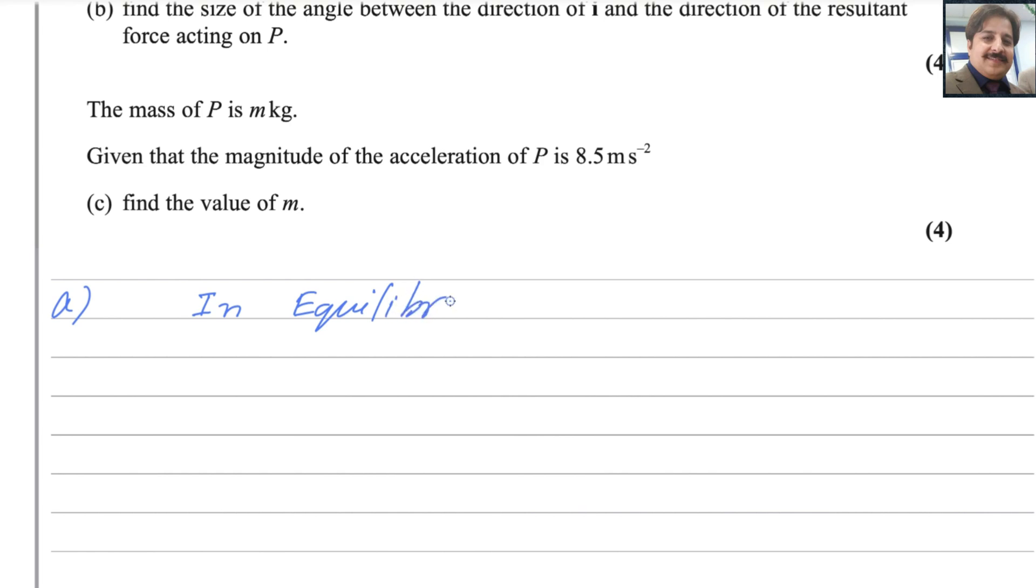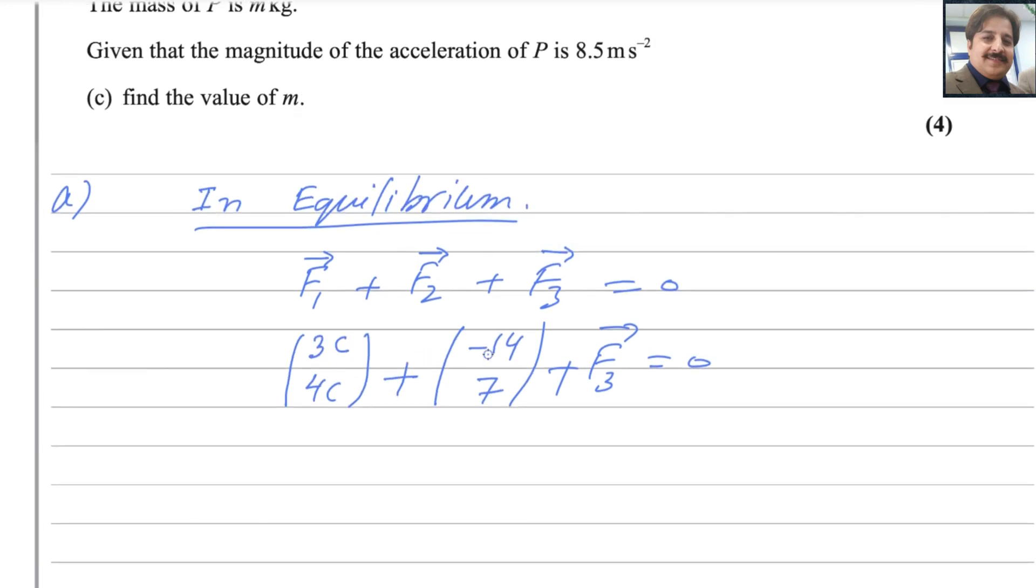These vectors we can write in column vector form, that is more easier to solve: 3c and 4c, minus 14 and 7. Because they are vectors, better you mention by using arrows. So plug in the values: 3c and 4c plus minus 14 and 7 plus F3. We can write as 3c minus 14, 4c plus 7 plus F3 equals to zero.